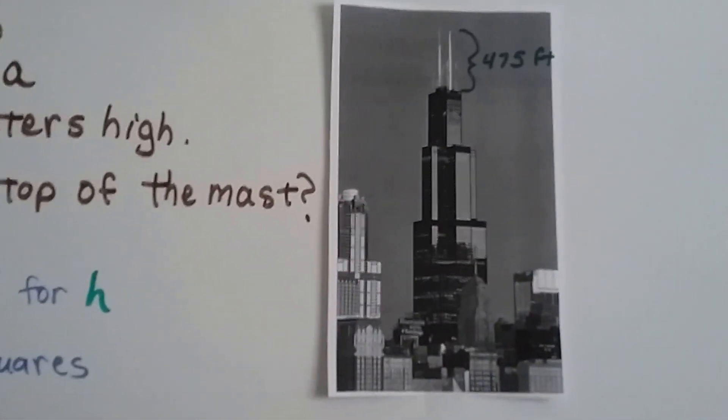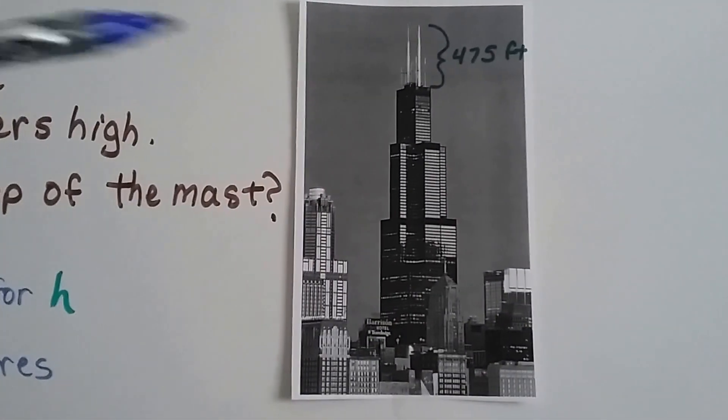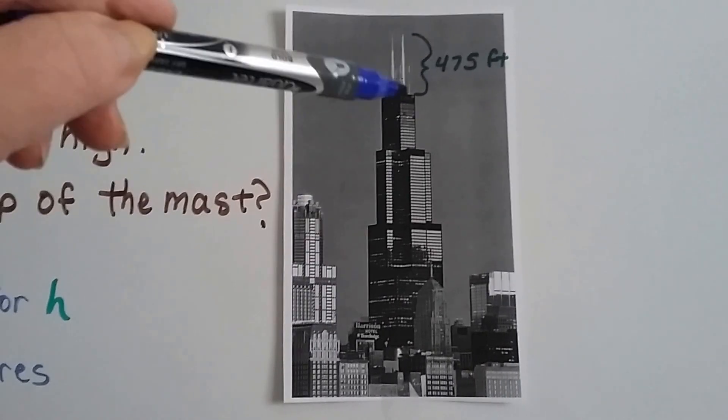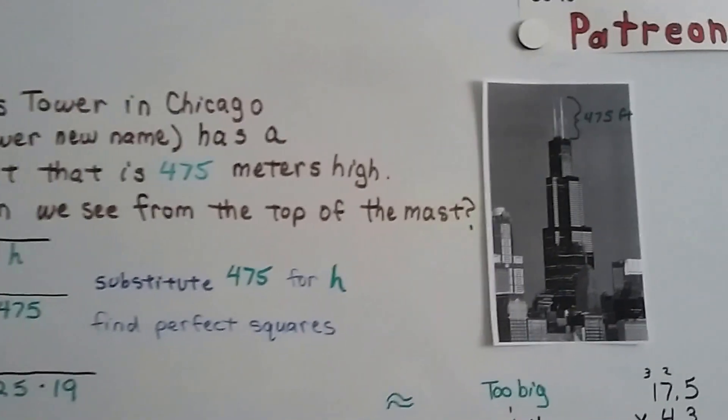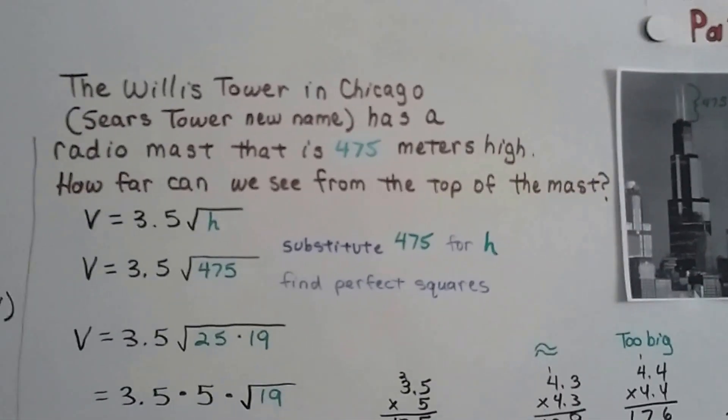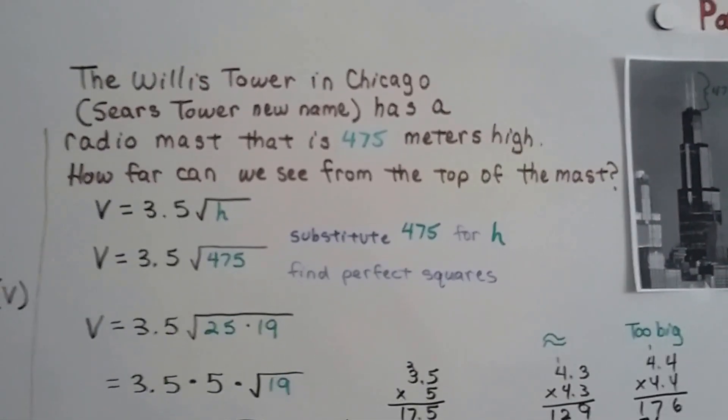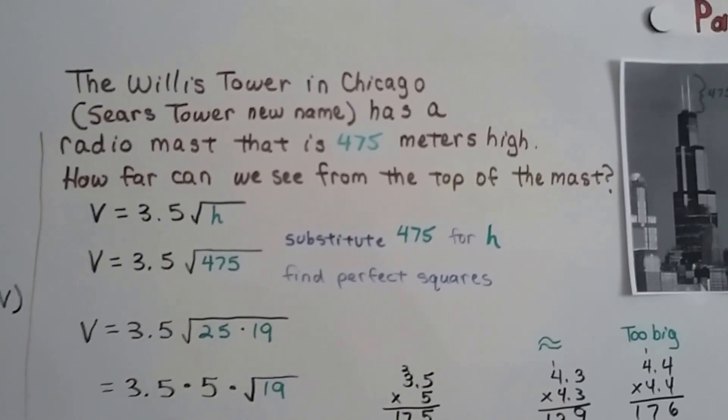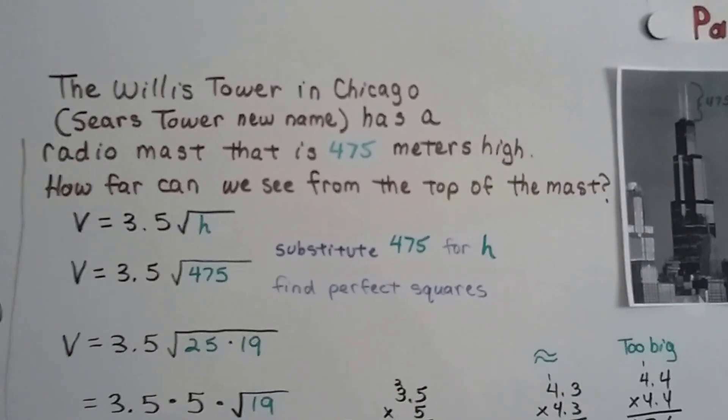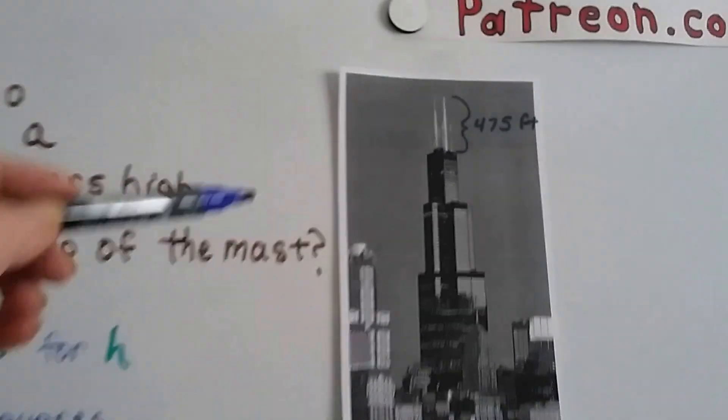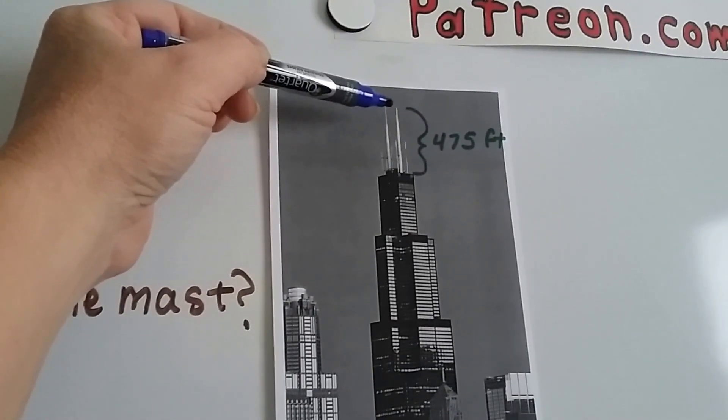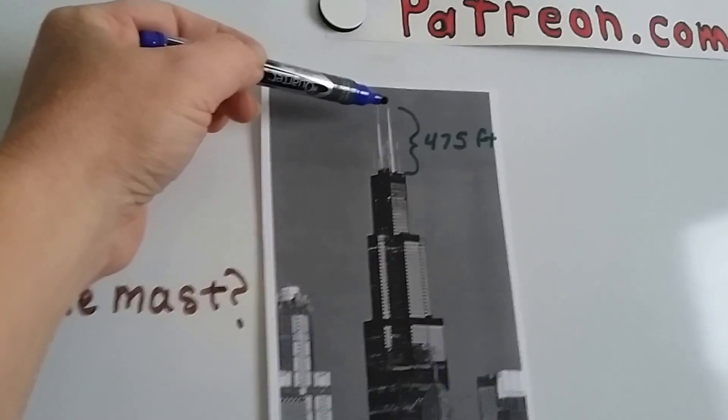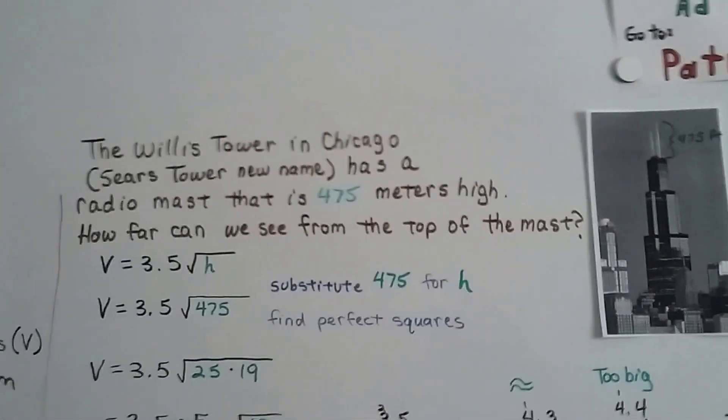Take a look at this picture here. This is the Willis Tower. It used to be called the Sears Tower. It's got a radio mast right here that's 475 feet tall. That's pretty tall for a radio antenna. The Willis Tower in Chicago, that's the Sears Tower's new name, has a radio mast that is 475 meters high. How far can we see from the top of that mast? They're not going to allow us to go up here. But if we were up here, sitting up here, hanging on for dear life at the very, very top, how far would we be able to see to the horizon? How far would we be able to see out?